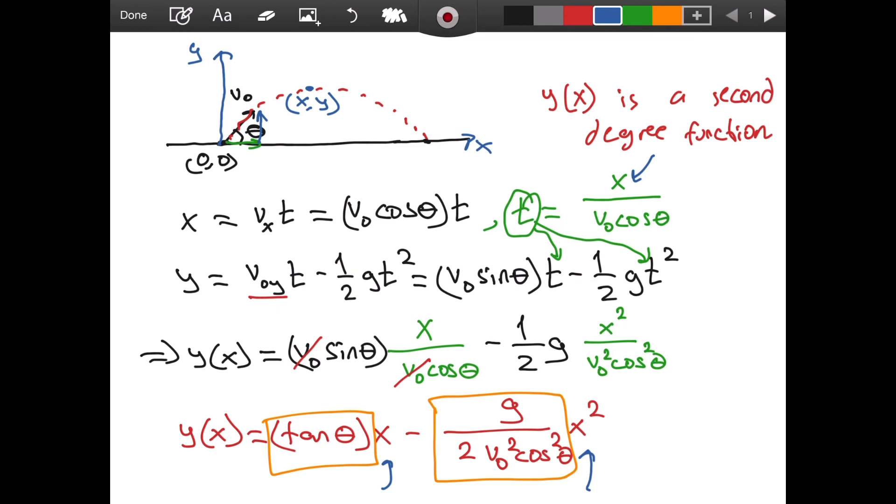So, in short, we have shown that the trajectory of a projectile is a parabola when there is no air resistance. I hope this video was helpful. If you have any questions, please write them in the comment section. I hope to see you in another video. Until then, take care.